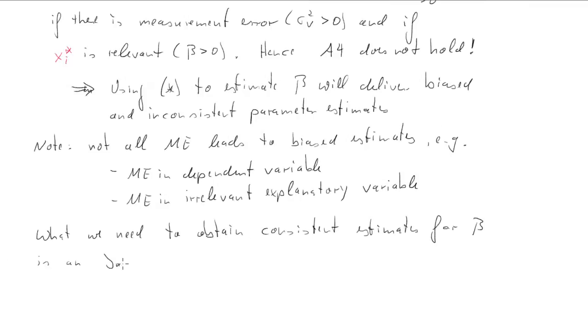So what we actually need in order to estimate consistent estimators for beta in the presence of measurement error is what we call instrumental variable estimation.